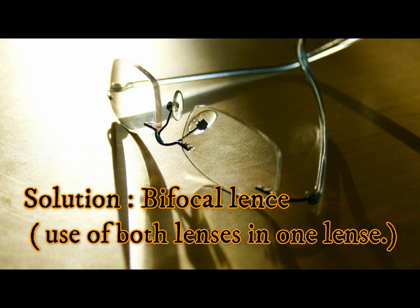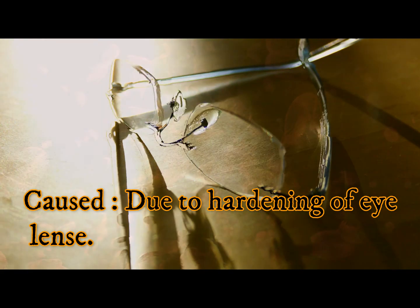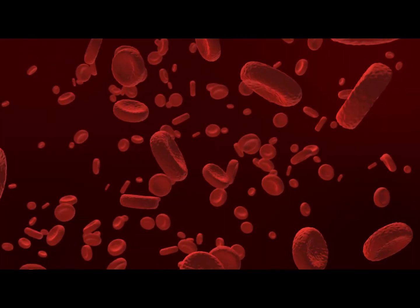How can we correct this? Bifocal lens is a solution. Bifocal lens is such a lens that is used in spectacles. The upper part is either a convex lens or concave lens, and the lower part is either convex or concave—only one of them. It is caused due to hardening of the eye lens, as I told earlier.